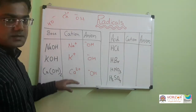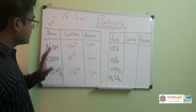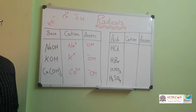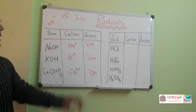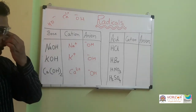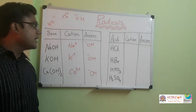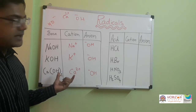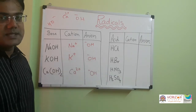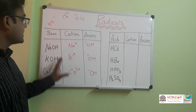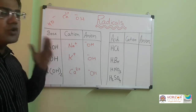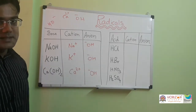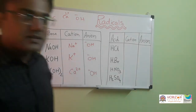These are some bases. In all the bases, OH minus is common — most bases contain OH minus as their radical. The main point is that the positive ion is known as the basic radical and the negative ion is known as the acidic radical. So most bases contain OH minus as their acidic radical.